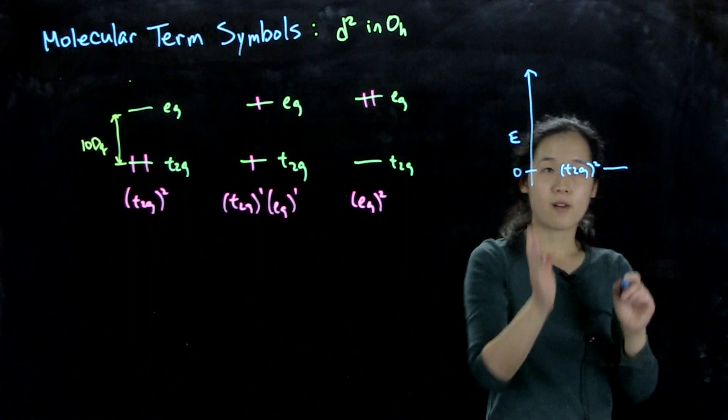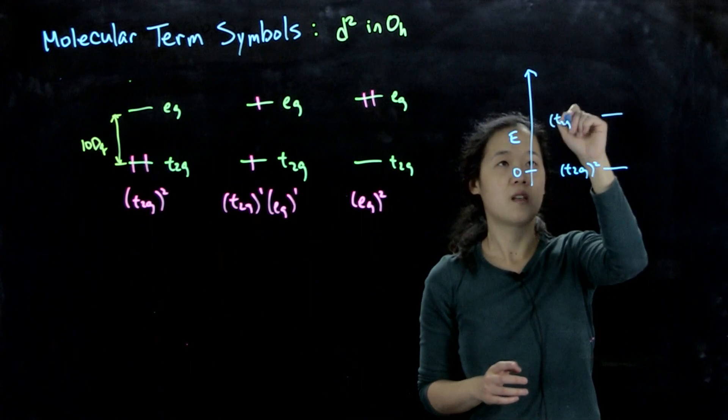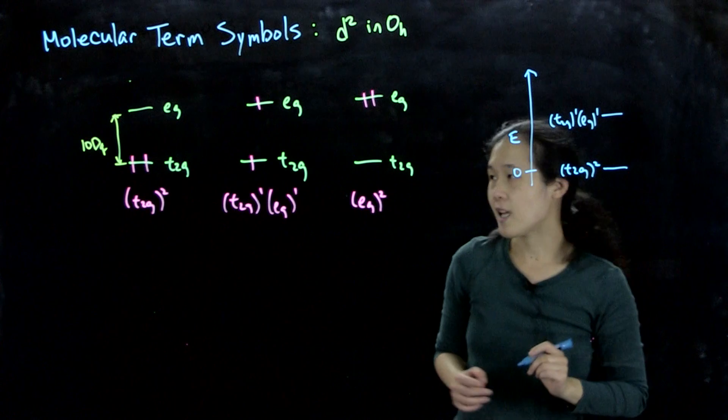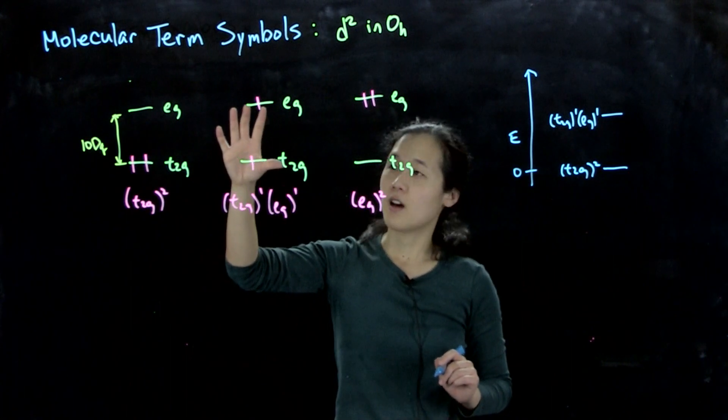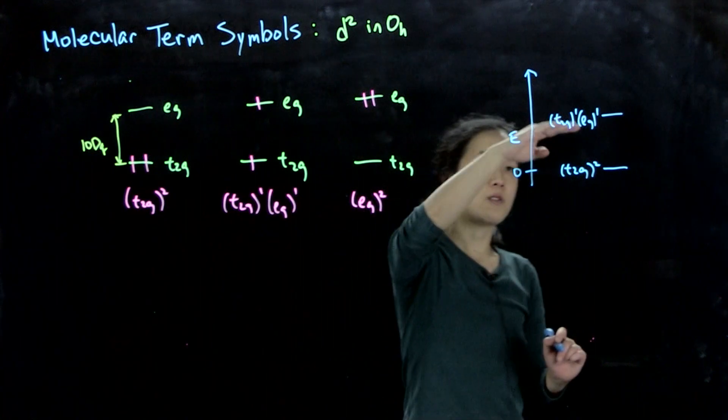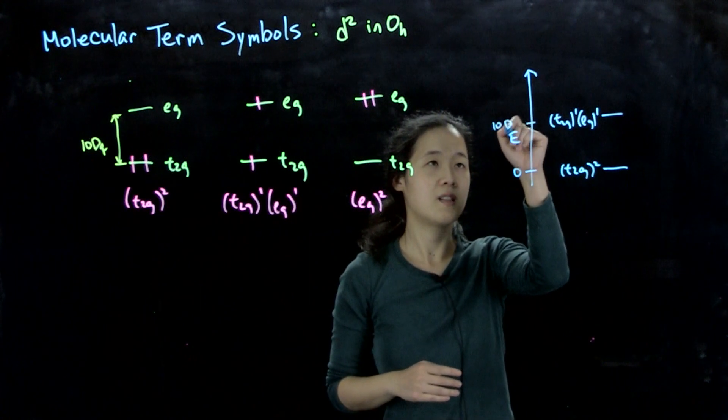And then terms that arise from this configuration, t2g¹, eG¹, because we had to put one electron across this ligand field splitting, it's got to be higher energy than t2g configurations by around 10dq.